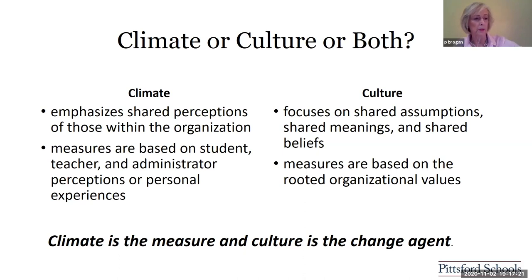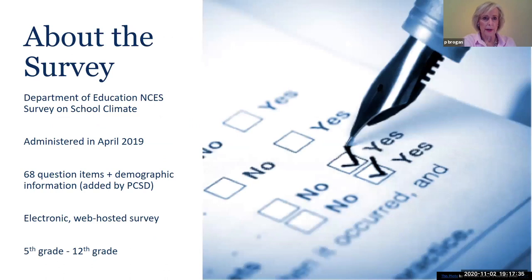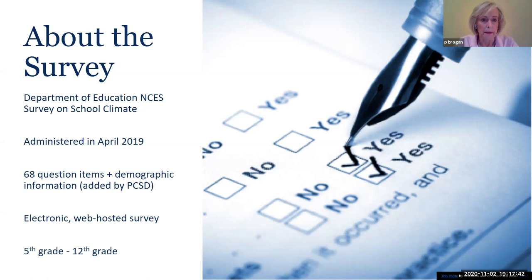We want people to be able to work collaboratively within school settings. We also want to assure we're able to model and nurture the growth and development of our students, including all components like the physical environment. About this survey: it's a U.S. Department of Education survey, administered in April 2019, 68 questions, electronic and web-posted for fifth grade through twelfth grade.